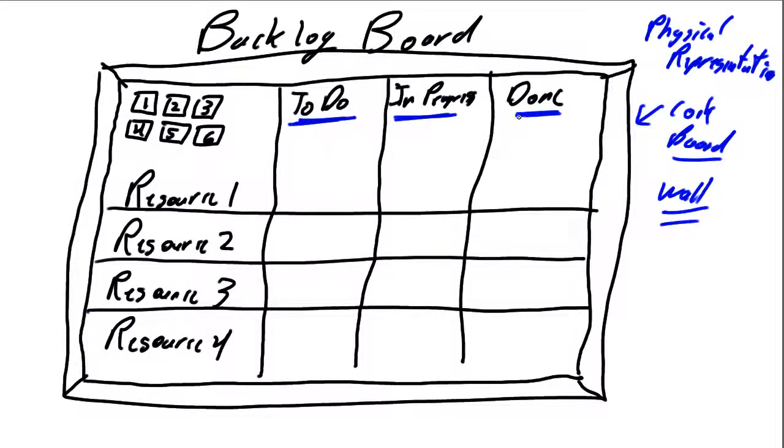During your Sprint planning process, the resources pick the stories they're going to work on. So, during planning, resource number one said, I'm going to work on story number one. So, that gets assigned to resource number one's to-do area.